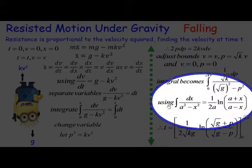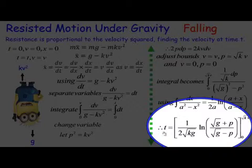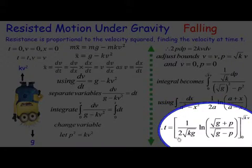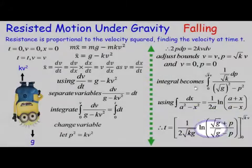So this now becomes one of the standard integrals. We get t is 1 over 2 root kg ln of root g plus p over root g minus p, and we're going to have to look at that between zero and root kV.